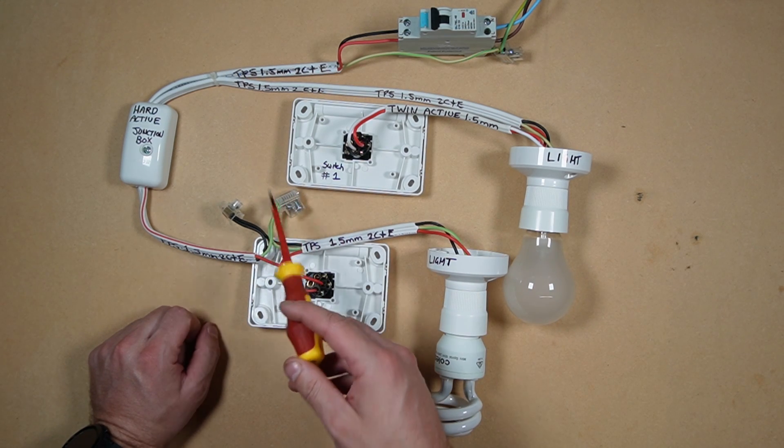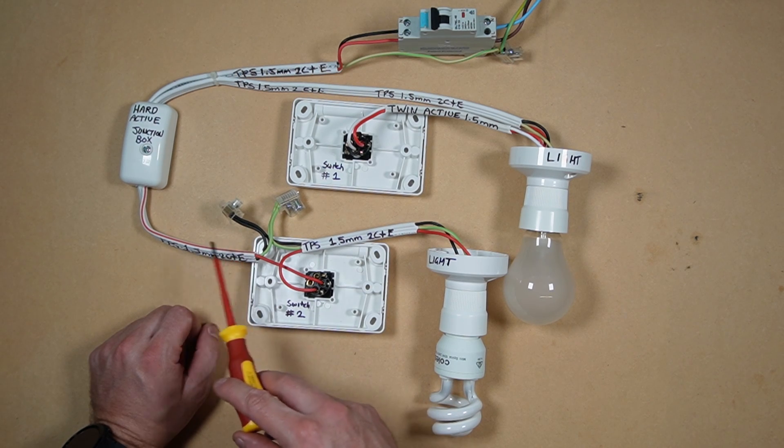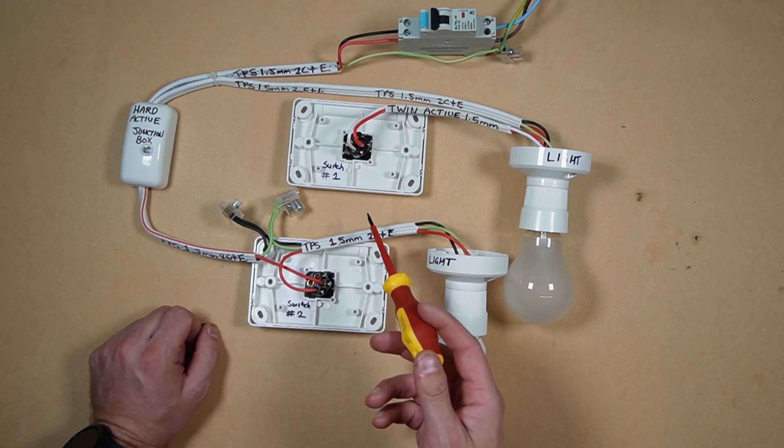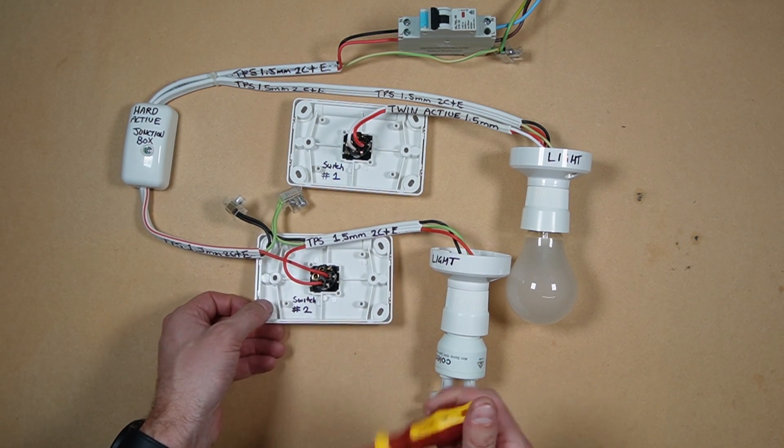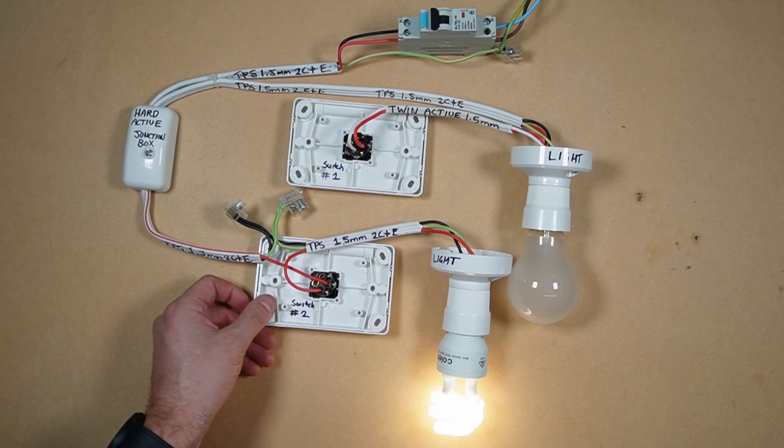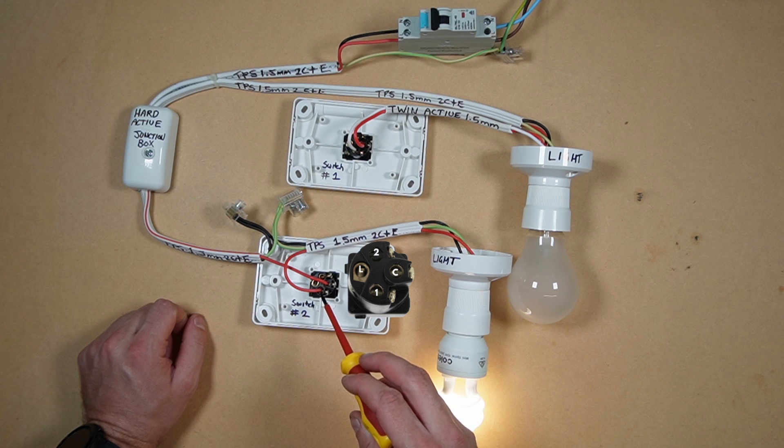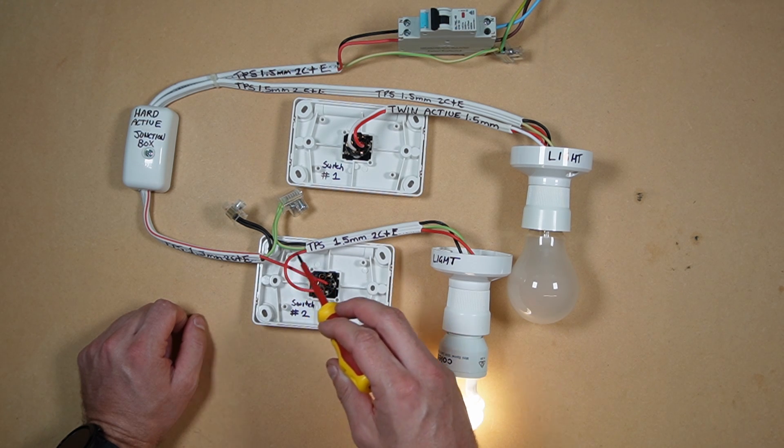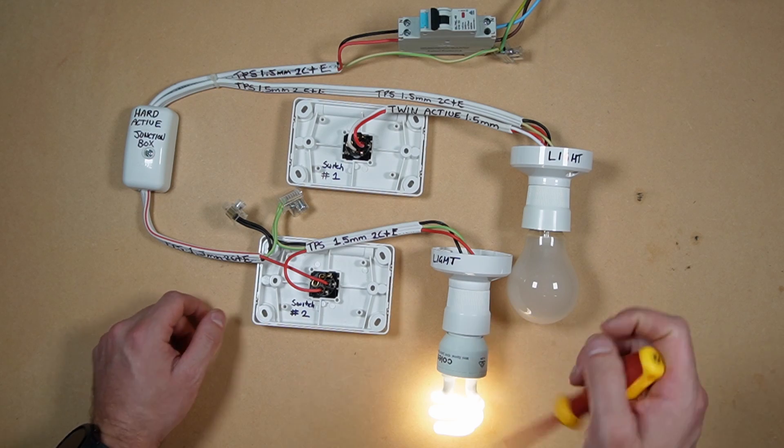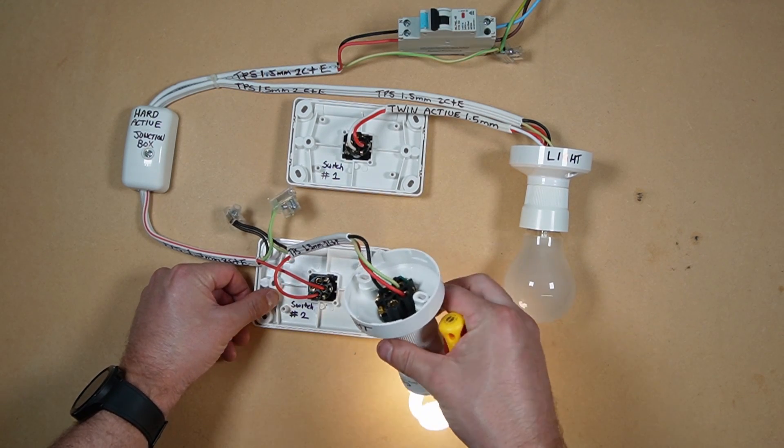So when the hard active comes through into the common and you turn the switch on, it'll switch between common and one, and it'll go up this red active conductor to the light, and these are the connections here.